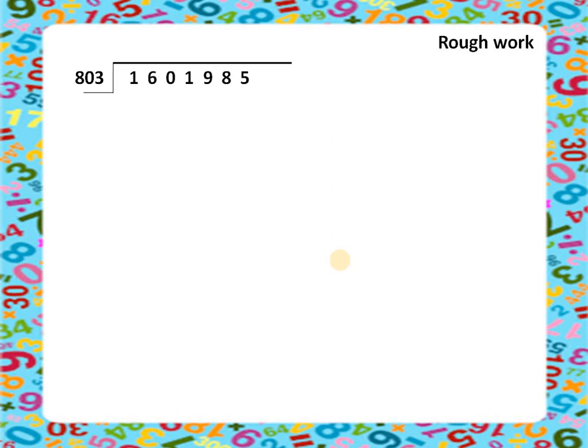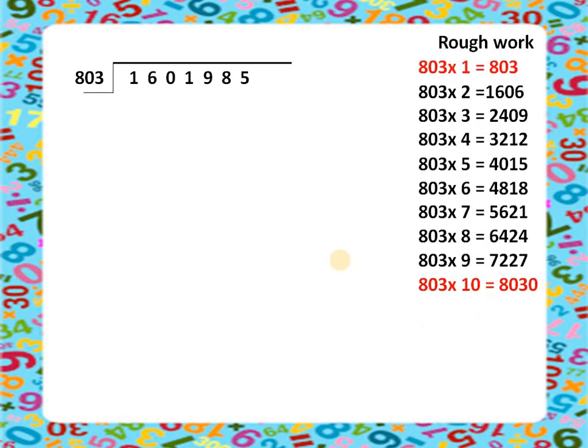We do rough work on the right-hand side first. The multiples of 803 are: ×1=803, ×2=1606, ×3=2409, ×4=3212, ×5=4015, ×6=4818, ×7=5621, ×8=6424, ×9=7227.